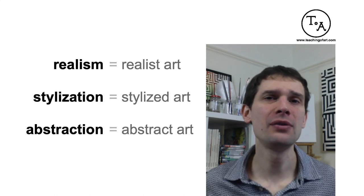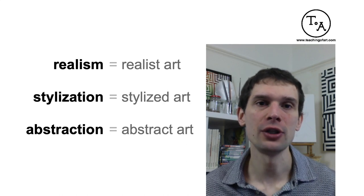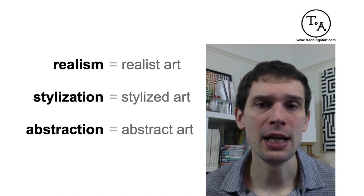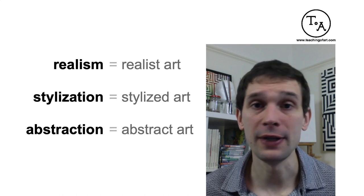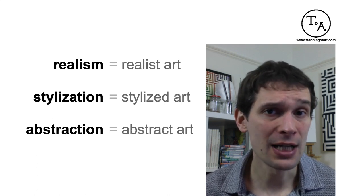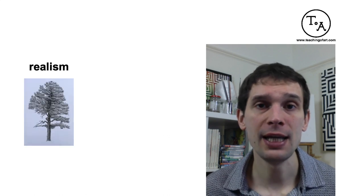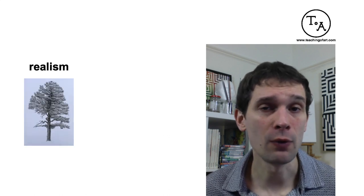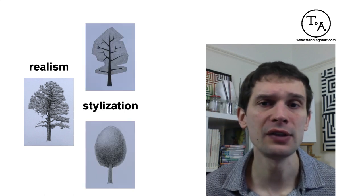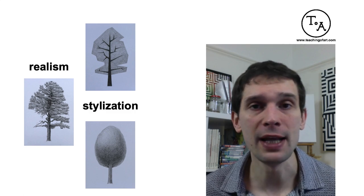Let's do a quick summary. I have explained three terms: realism, stylization and abstraction. If you actively create art in any form, you should know these three terms and actively use them. Realism or realist art shows a drawn subject in a realistic way with all the details. Stylization means simplification — stylized art shows a drawn subject in a simplified way with fewer details.